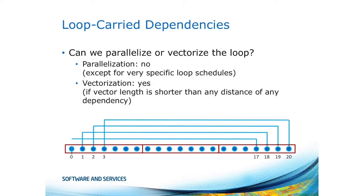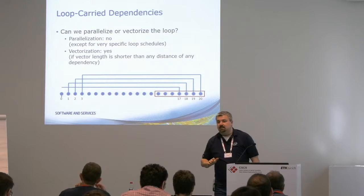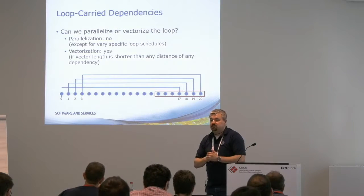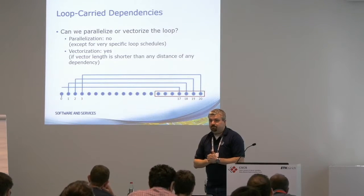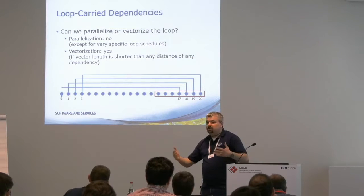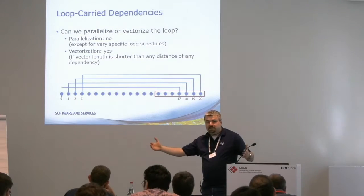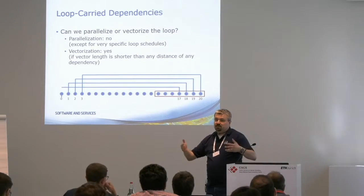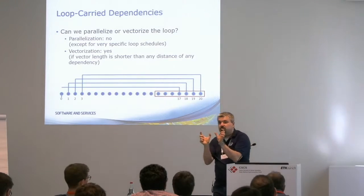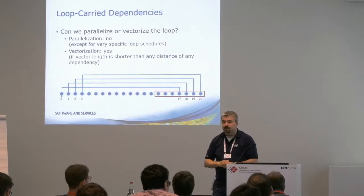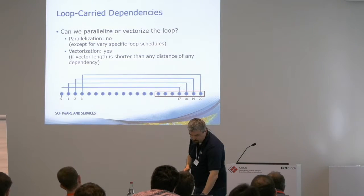That's where 'safelen' comes in. Safelen tells the compiler: dear compiler, I know there's a data dependency, but the dependency length is 17, so you can use up to 16 elements per register without breaking it. The compiler can then choose to use 4-element vectors, 16-element vectors, double-bump two registers into a virtual 8-lane register — whatever it needs, as long as it doesn't break the dependency. It's additional context information for the compiler.